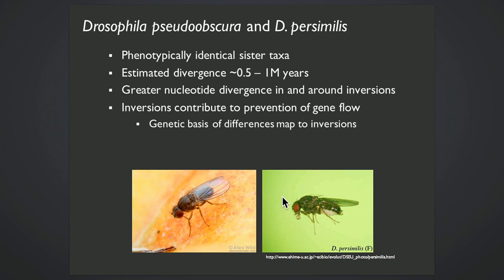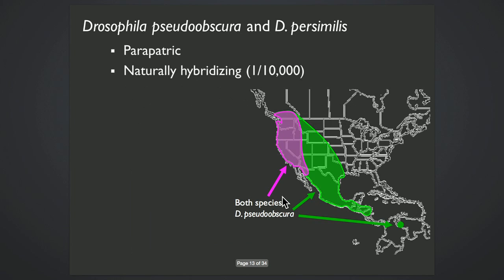Reproductive isolation genes map almost entirely to inversions. And they do hybridize in nature at a low rate. They're peripatric with both species occurring in western North America.